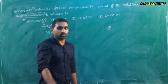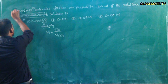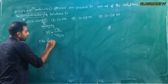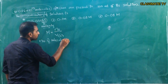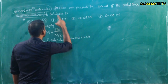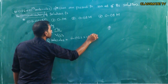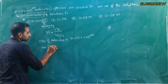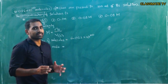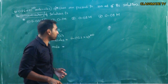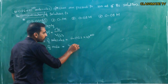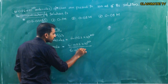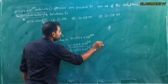Number of moles of solute gives us molarity. Here, molecules of urea are given, so we calculate: number of moles = given particles / Avogadro's number = 6.022 × 10²³ / 6.022 × 10²³ ... giving us 10⁻³ moles.